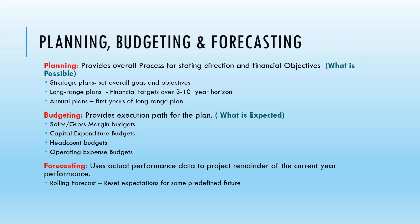The next concept is budgeting, which provides the execution path for the plan — defining what is expected. This includes sales and growth margin budgets, capital expenditure budgets, headcount budgets, and operating expense budgets. These represent different areas of the business, allowing us to allocate budgets to the appropriate persons or departments.